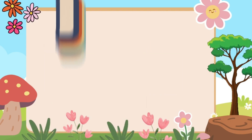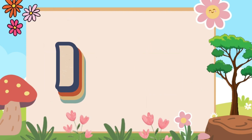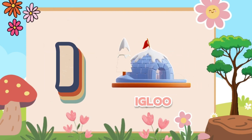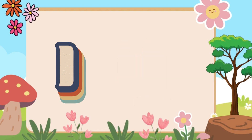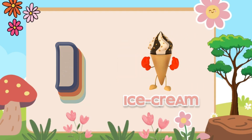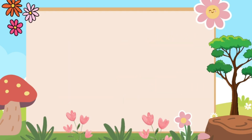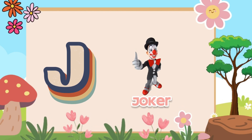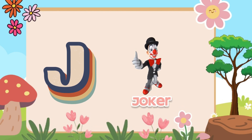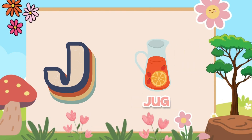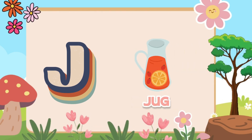I. I for igloo. I for ice cream. J. J for joker. J for jug.